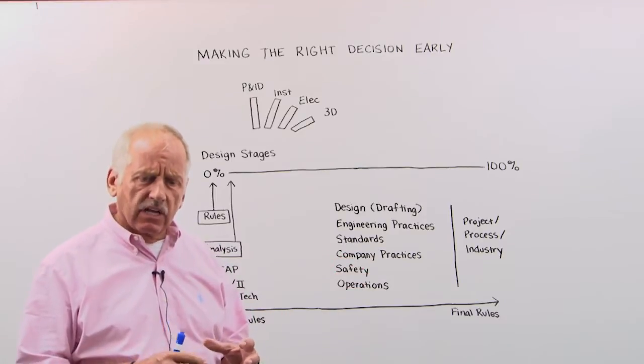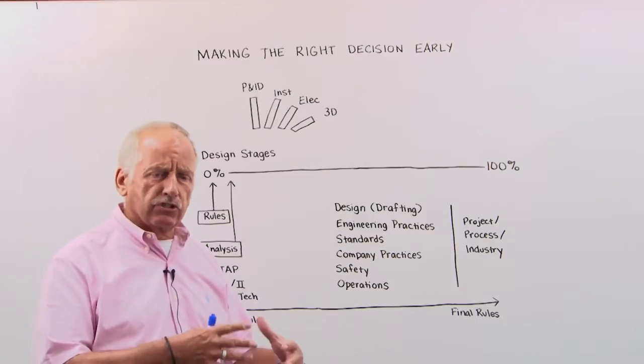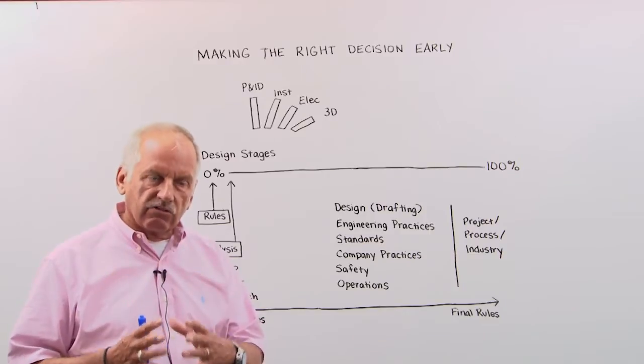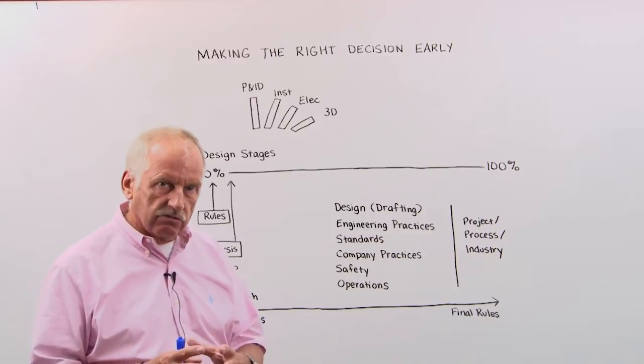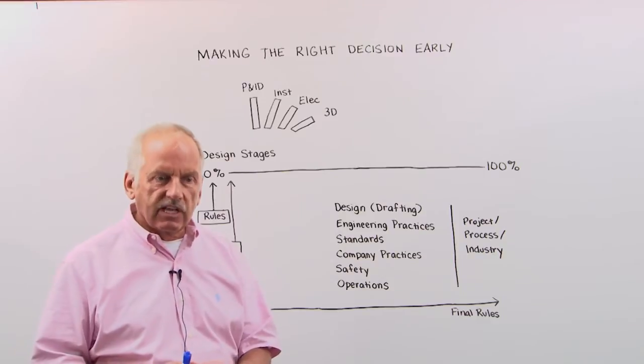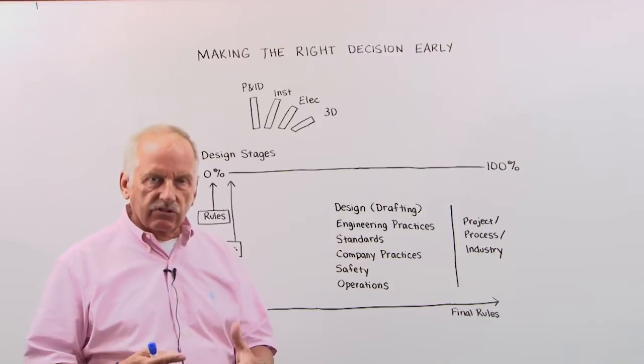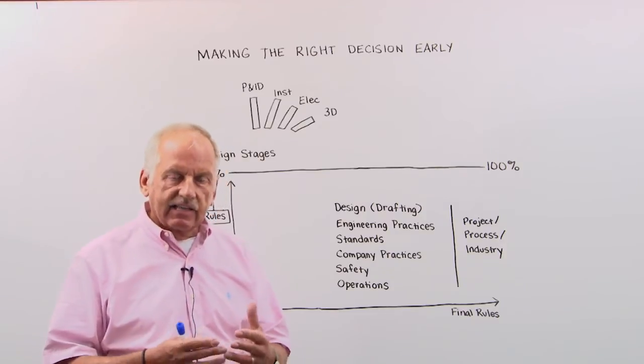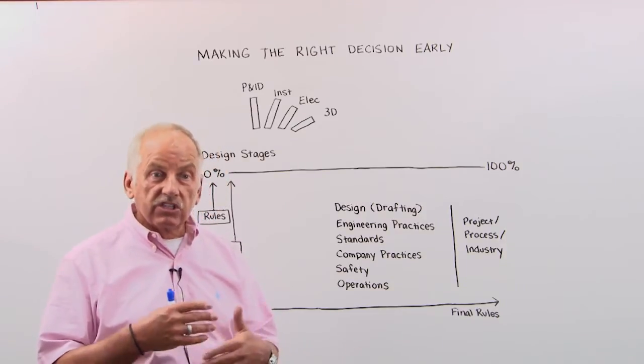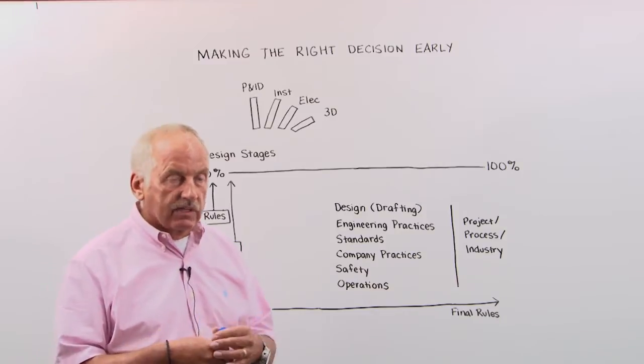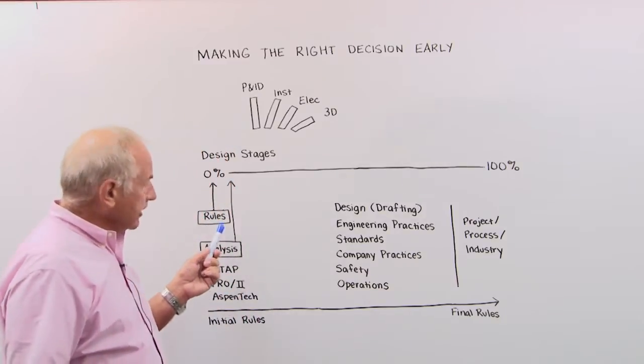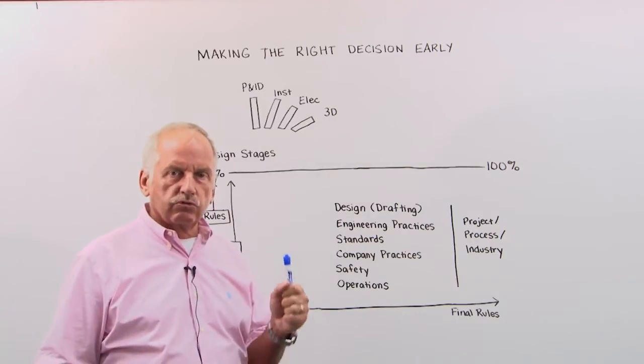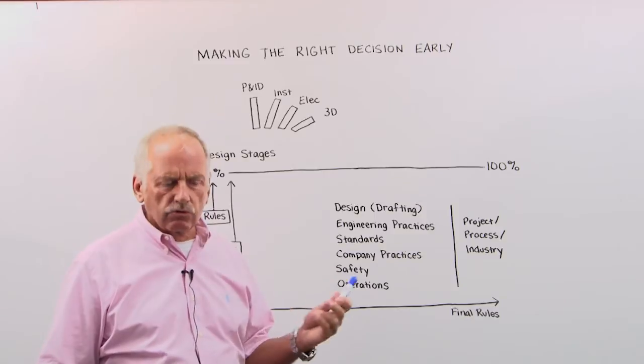So that is what I think is the difference between adding functions and features, which is good and will help, versus making the right decision early. Now, how can you do that? I think we have very experienced engineers, we have standards, we have a lot of knowledge, and somehow we need to capture that and apply this knowledge upfront to the design. We can do that by creating these rules. So we can create the rules and we apply those rules to the design.